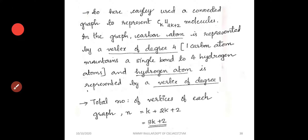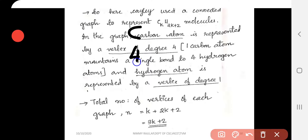Cayley used a connected graph to represent CₖH₂ₖ₊₂ molecules. In the graph, a carbon atom is represented by a vertex of degree 4, since one carbon atom maintains a single bond to 4 hydrogen or carbon atoms. A hydrogen atom is represented by a vertex of degree 1. So degree 1 is a hydrogen atom and degree 4 is a carbon atom.